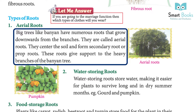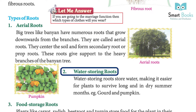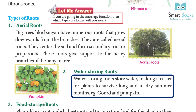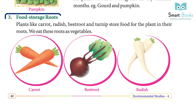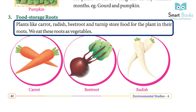Two: water-storing roots. Water-storing roots store water, making it easier for plants to survive long dry summer months, as in gourd and pumpkin.